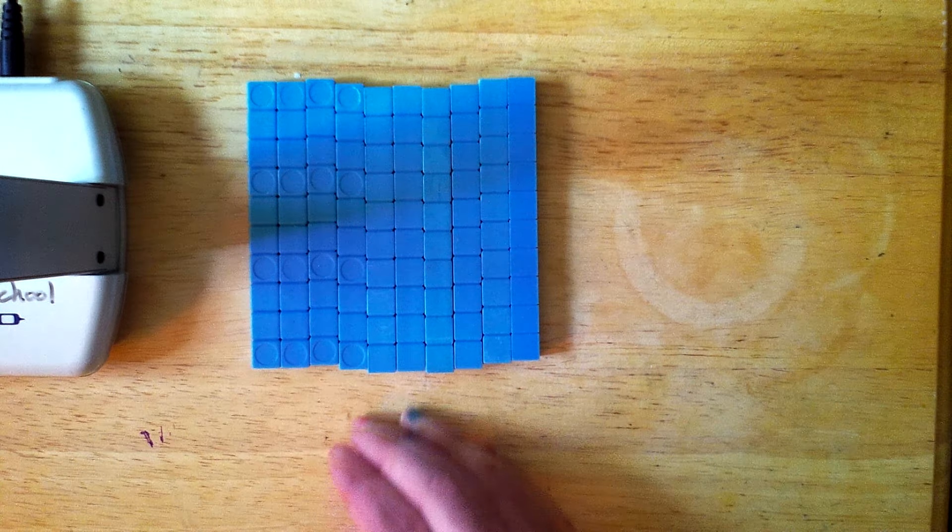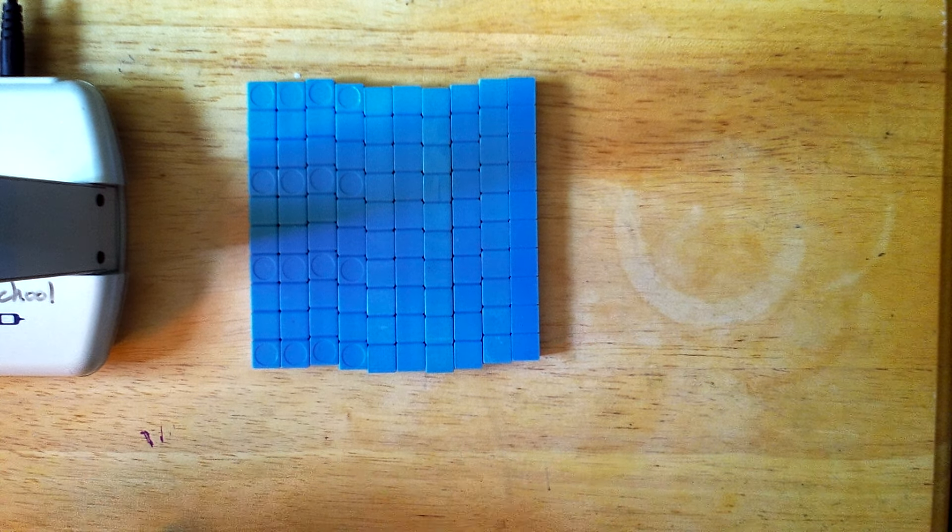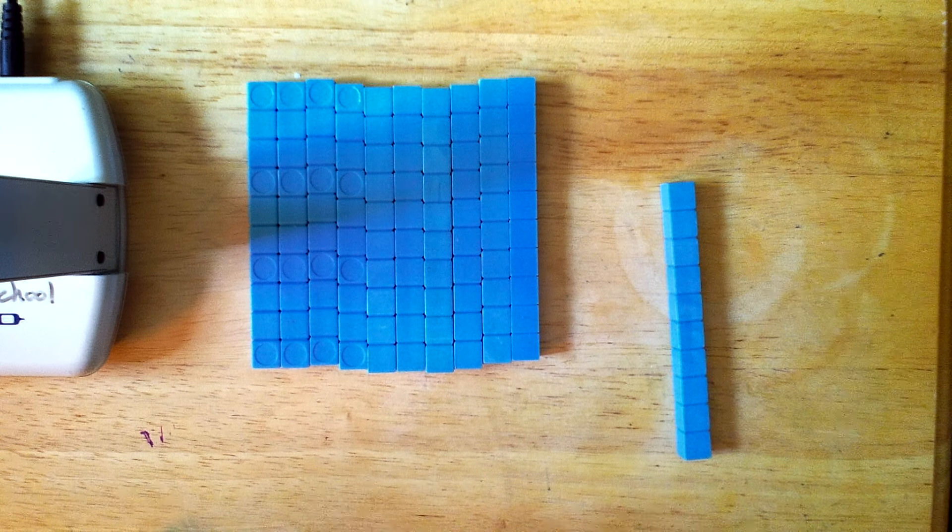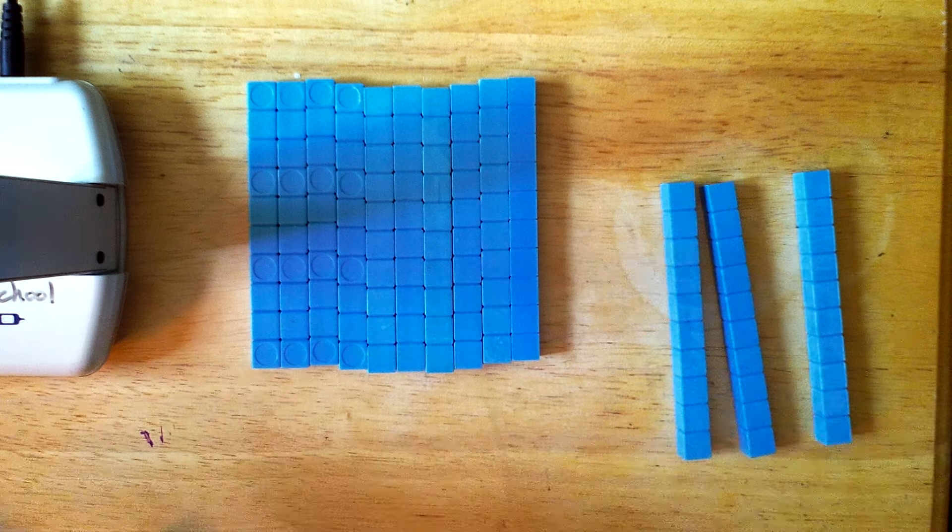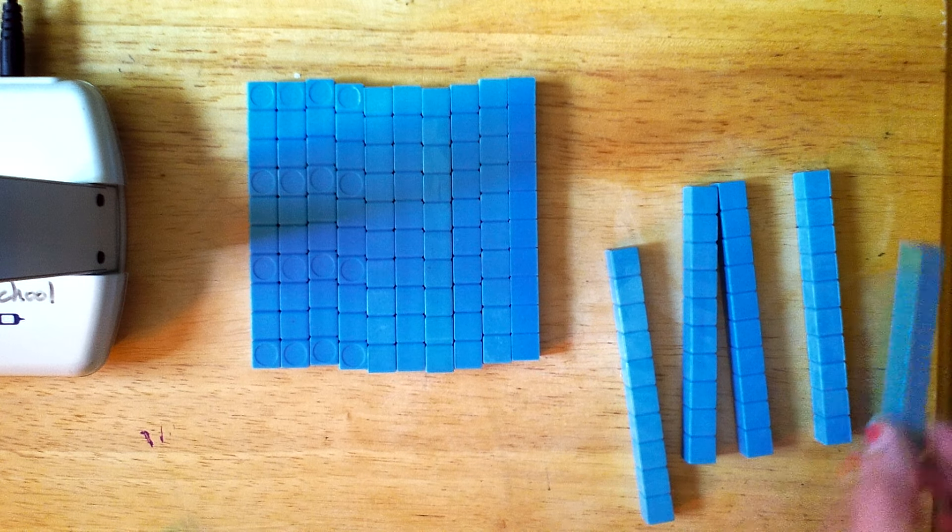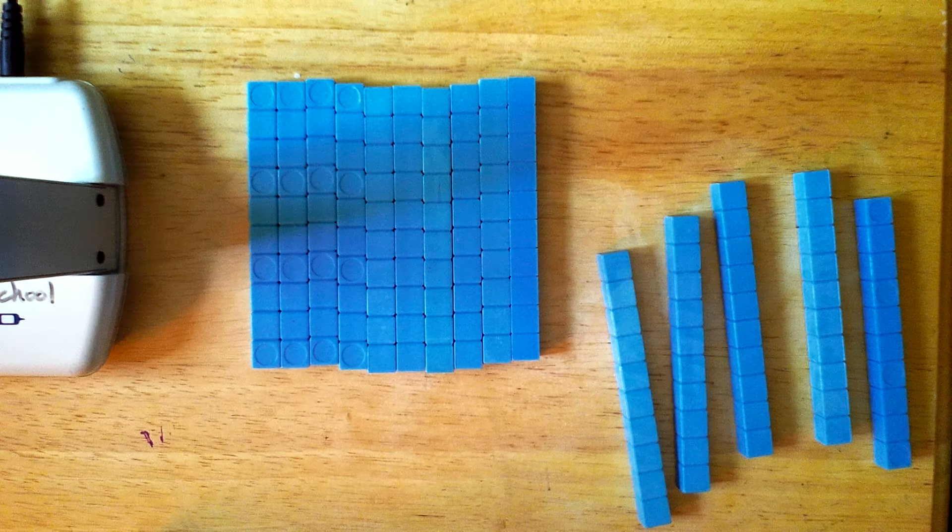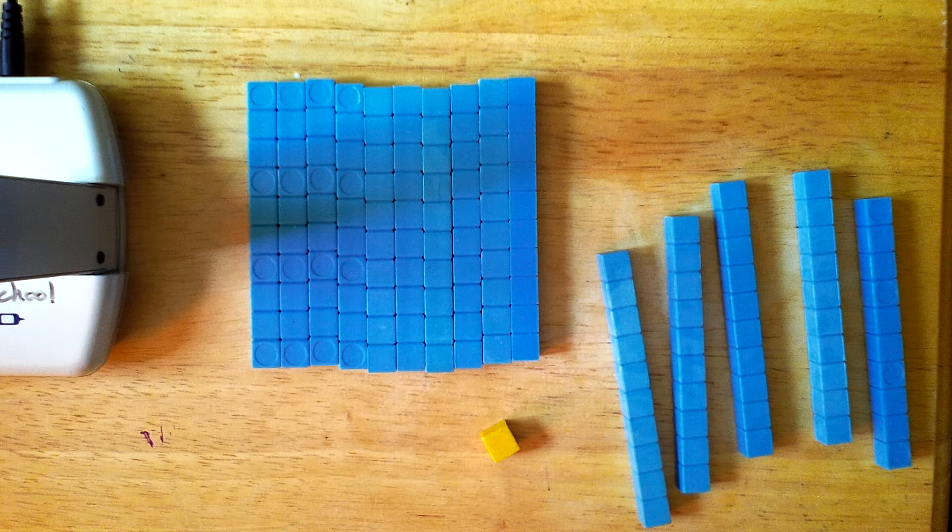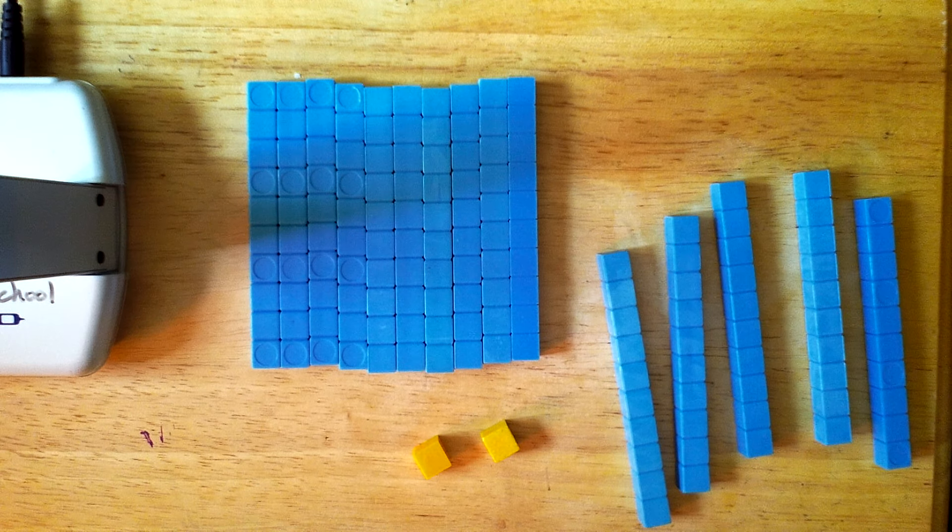And then I have 5 in my tens place: 110, 120, 130, 140, 150. Then 151—see my yellow cubes?—152, 153.